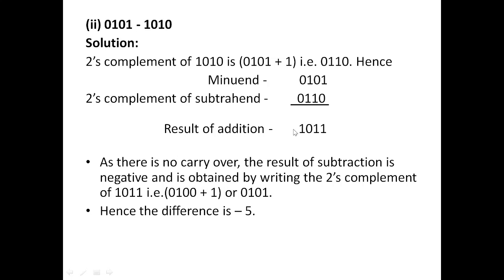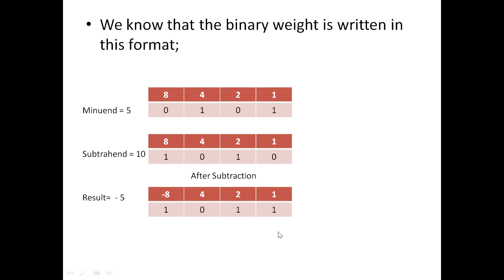Since there is no carry, carry is zero, it indicates that the result is a negative result. The number we have received after the subtraction is the two's complement representation of minus 5. In two's complement representation, the most significant bit has weight minus 8, so we take minus 8 plus 2 plus 1, which is minus 5.